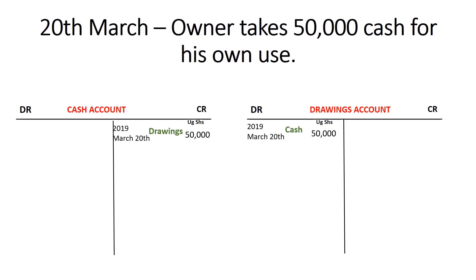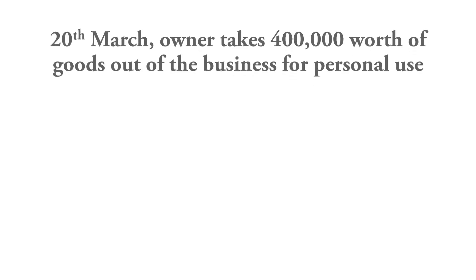Most business owners sometimes don't just withdraw cash for personal use — sometimes it is goods. For example, if you are managing a shop and selling food, and the owner takes food out of the shop and brings it home, that is also considered a drawing. The owner is withdrawing assets from the business for personal use. This time the drawing is not in the form of cash — it's in the form of goods. So how do we handle this double entry?